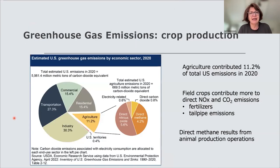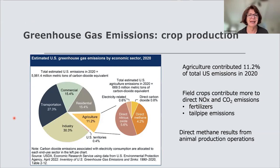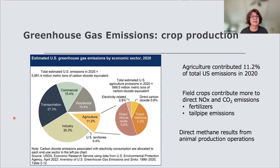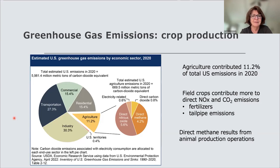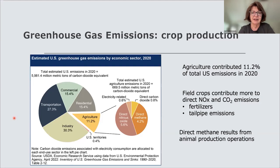This data shows estimated US greenhouse gas emissions by economic sector from the USDA in 2020. Agriculture was producing 11% of emissions — up from 9% around 2015 — and that is related to basically four different areas of emissions.